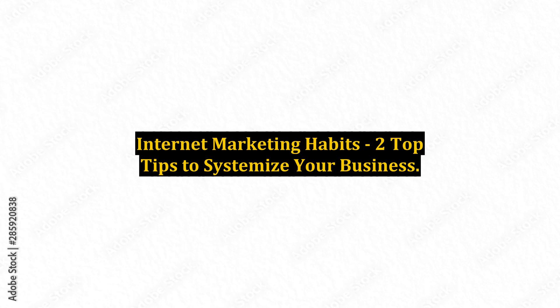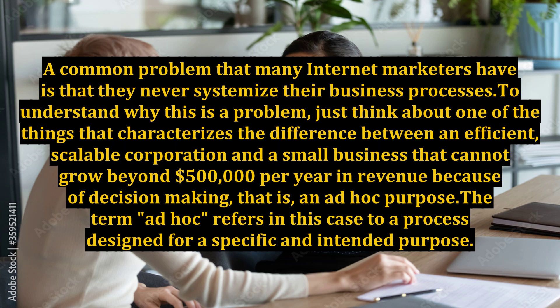Internet Marketing Habits – Two Top Tips to Systemize Your Business. A common problem that many internet marketers have is that they never systemize their business processes. To understand why this is a problem, just think about one of the things that characterizes the difference between an efficient, scalable corporation and a small business that cannot grow beyond $500,000 per year in revenue — because of decision-making that is ad hoc in purpose. The term ad hoc refers in this case to a process designed for a specific and intended purpose.